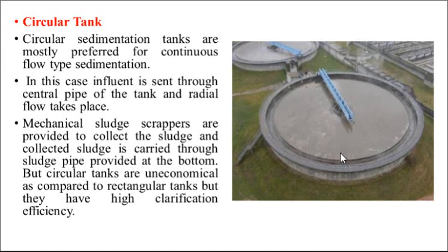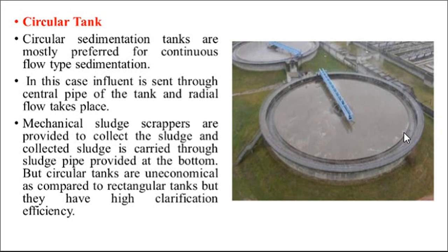This is the circular type of sedimentation tank. Through the central pipe, wastewater is applied over the area of the tank and flows radially. The settlement of different sediments takes place at the bottom of the tank. A channel is constructed through which the treated, clean wastewater is collected. Whatever settled sediments remain are taken out through the pipe provided at the bottom of the tank.